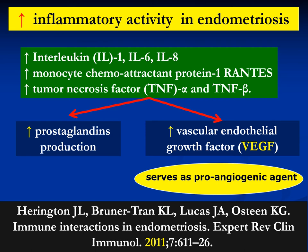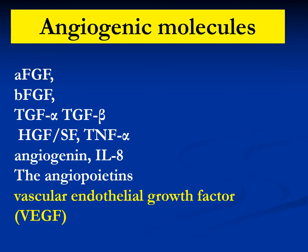In cases of endometriosis, we notice increased vascularity of the endometriotic lesions. The increased inflammatory activity in endometriosis is due to increased interleukins, monocyte chemoattractant protein 1, RANTES, increased tumor necrosis factor alpha and TNF beta. All these inflammatory activities will lead to increased prostaglandin production and increased vascular endothelial growth factors. These increased prostaglandins and growth factors in turn lead to angiogenesis.